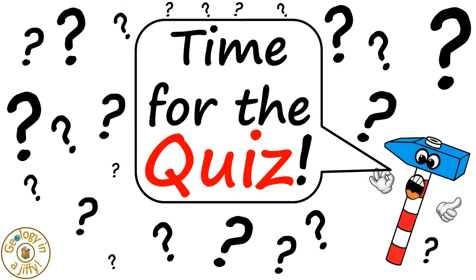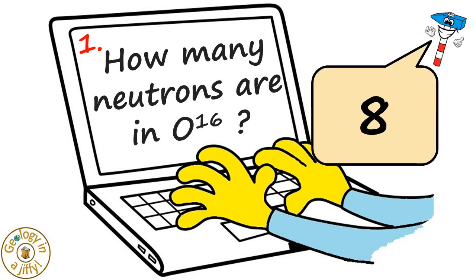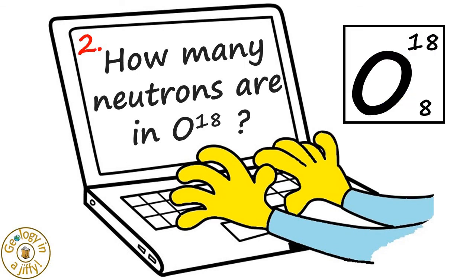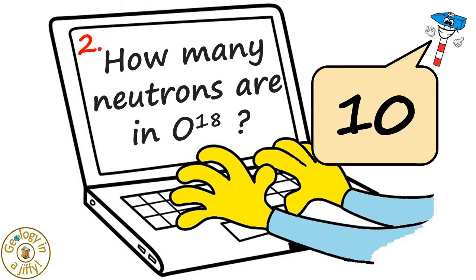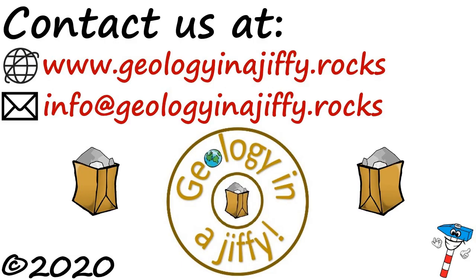Time for the quiz! How many neutrons are in oxygen-16? There are eight neutrons in oxygen-16. How many neutrons are in oxygen-18? There are ten neutrons in oxygen-18. Well done! Please subscribe to my channel. Byeee!